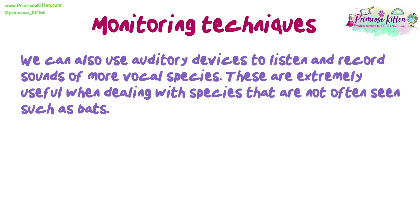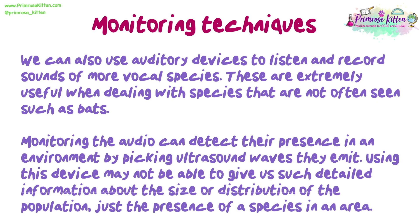We can also use auditory devices to listen and record sounds of more vocal species. These are extremely useful when dealing with species that are not often seen, such as bats. Monitoring the audio can detect their presence in an environment by picking up ultrasound waves they emit. Using this device may not be able to give us such detailed information about the size or distribution of a population — just the presence of a species in an area.